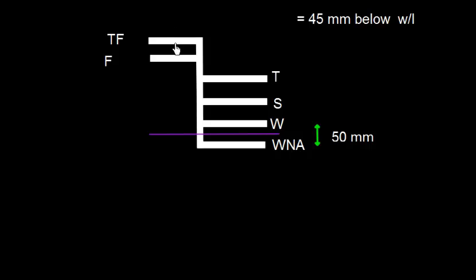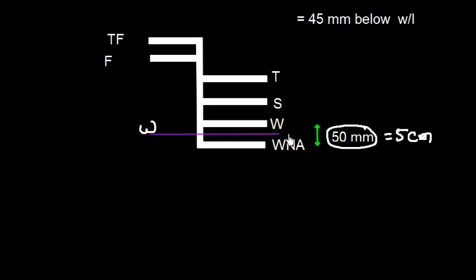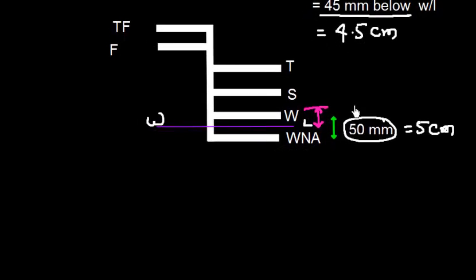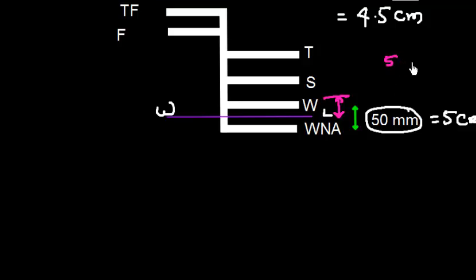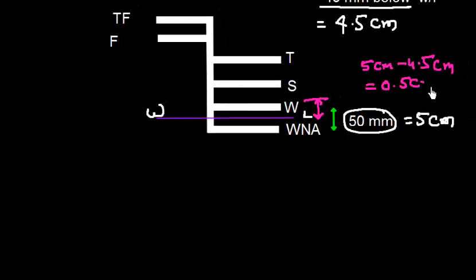Looking at a typical load line mark on the starboard side: T is Tropical, S is Summer, W is Winter, and WNA is Winter North Atlantic. The distance between W and WNA is 50mm (5cm). The waterline WL shows WNA is 45mm (4.5cm) below, so the distance from W mark to the waterline is 5cm − 4.5cm = 0.5cm.